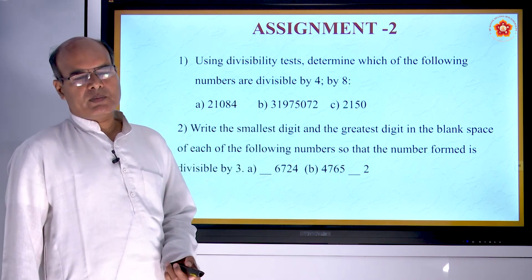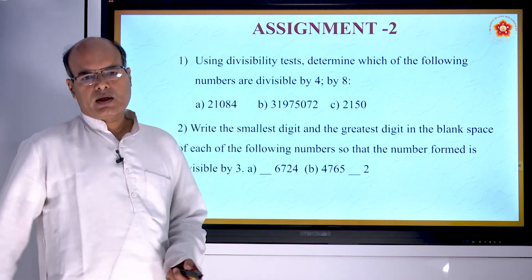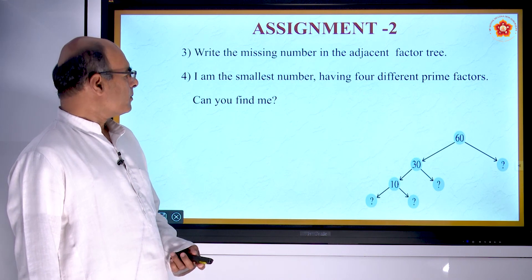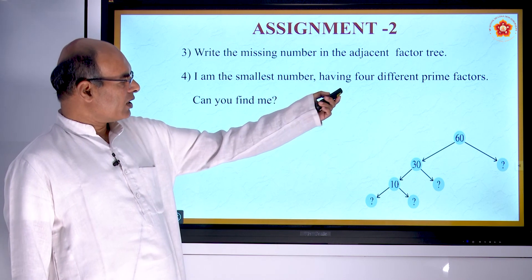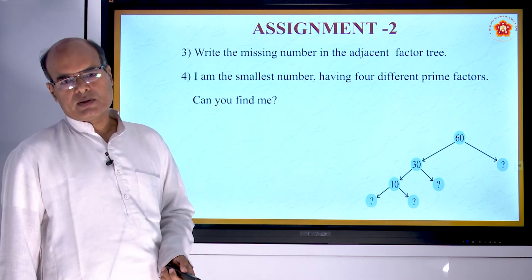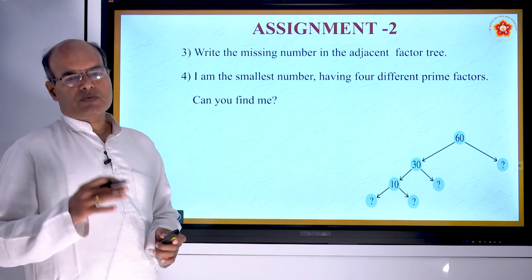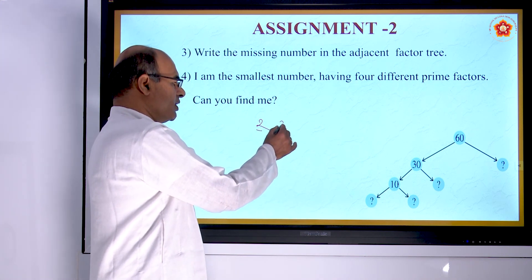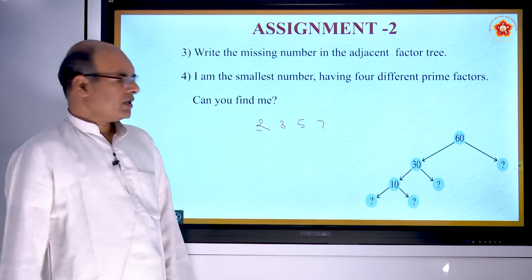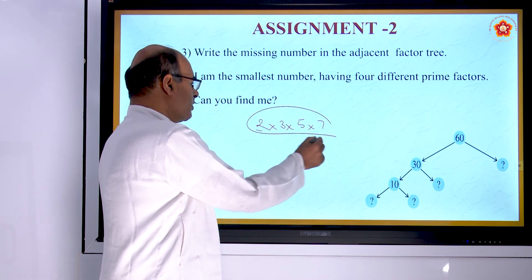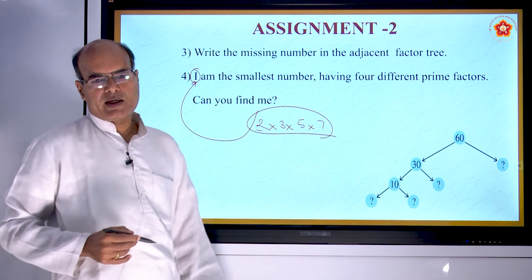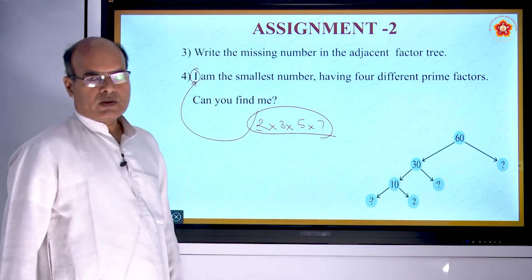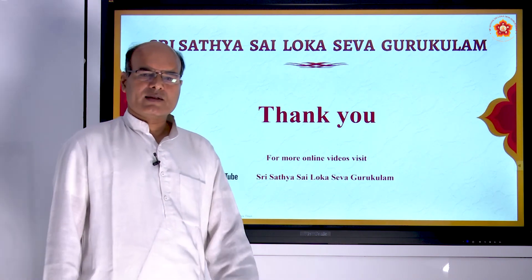These are a few questions for your assignment. Pause the video and take down these questions. The first question: I am the smallest number having 4 different prime factors — can you find me? The 4 smallest prime numbers are 2, 3, 5, and 7, and their product is the answer. There is also a figure with blanks to fill in. Good luck and thank you.